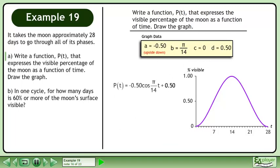The function is p of t equals negative 0.50 cos of pi over 14t plus 0.50.